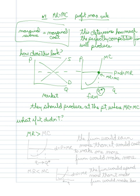What if marginal revenue exceeded marginal cost? Well then it would look like this. Let's say we were over here. This would clearly be a point where the marginal revenue exceeded the marginal cost. The firm would earn more than it would cost to make one more.